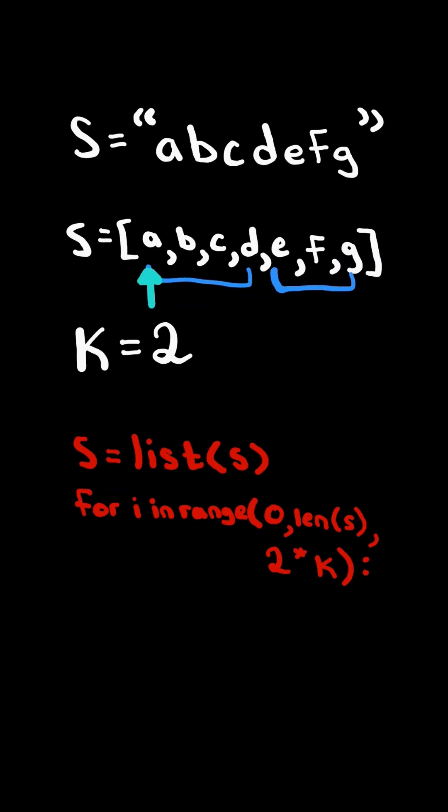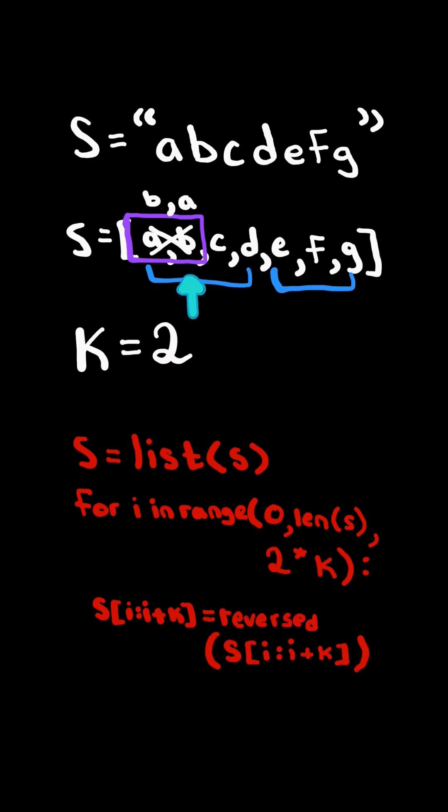So we start at index 0, and we consider the first k characters, and we set them equal to the reversed of the first k characters, and we increment by 2k to consider the next block.